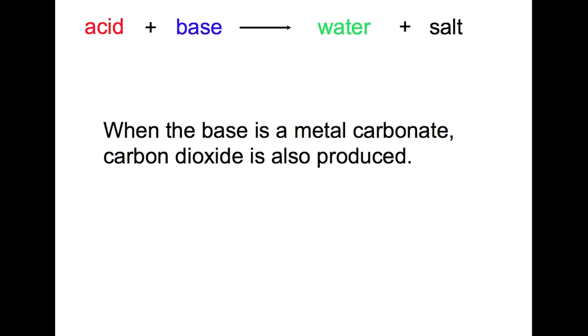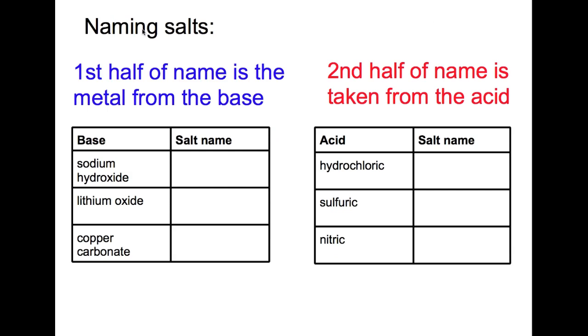The naming of the salt is very important. So the first half of any salt's name comes from the metal of the base. So here we have three bases: sodium hydroxide, so the start of the salt's name will be sodium. Here we have lithium oxide, so the start of whatever salt is produced will be lithium. And copper carbonate, the start of any salt will be copper. For the second half of the name you have to do a little bit more work. So you take the name of the acid and it gets changed slightly to give the end of the salt's name.